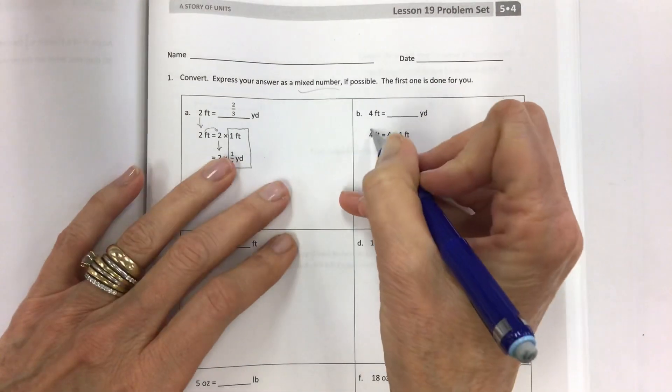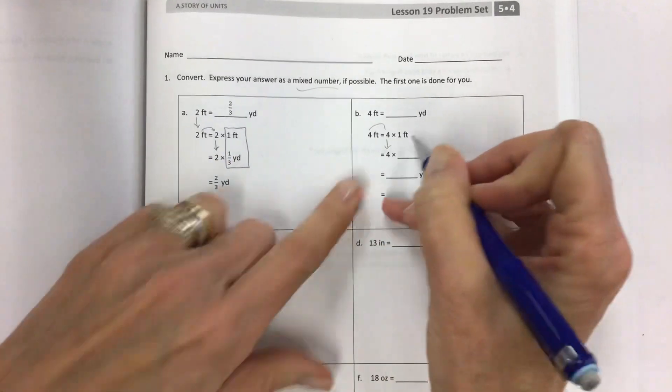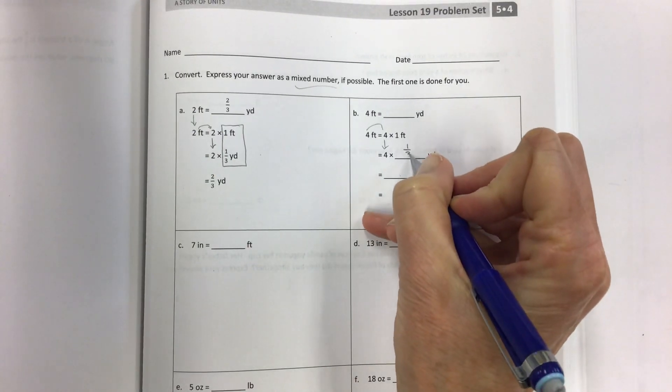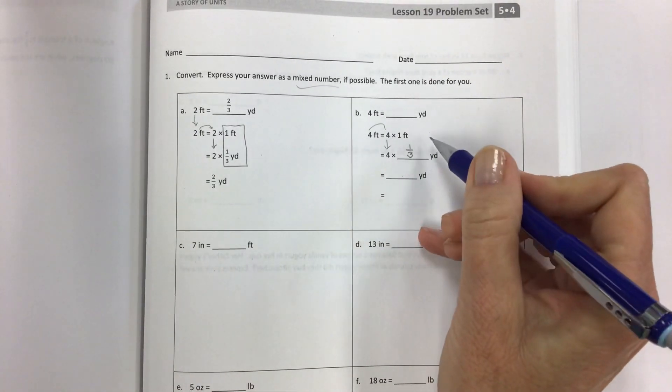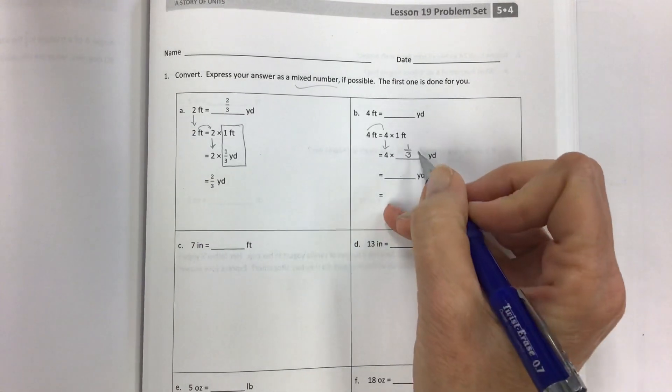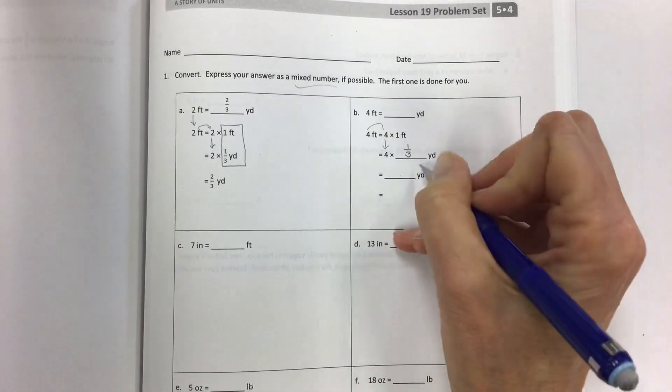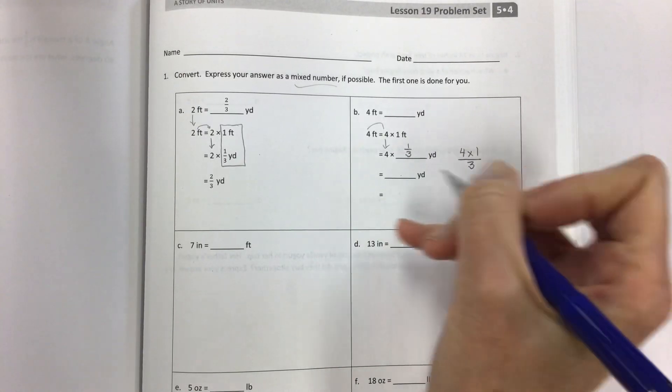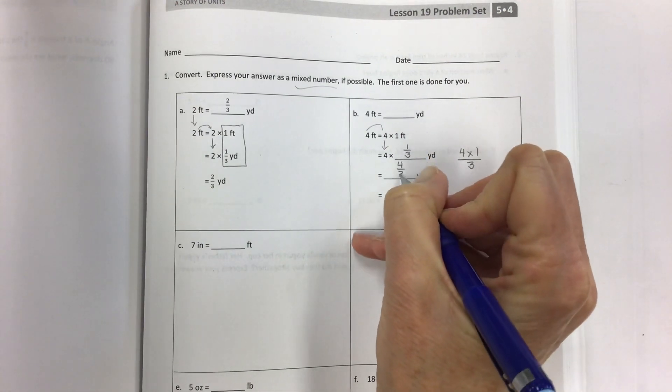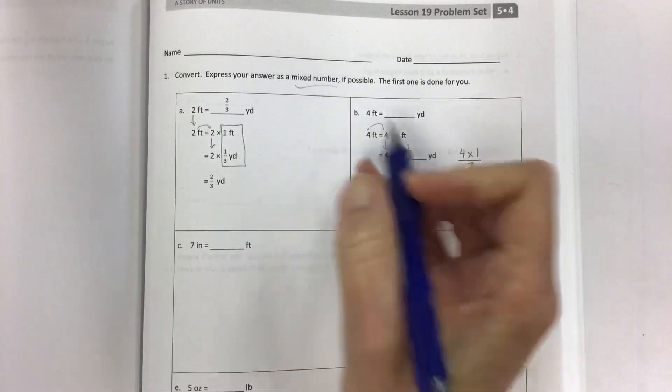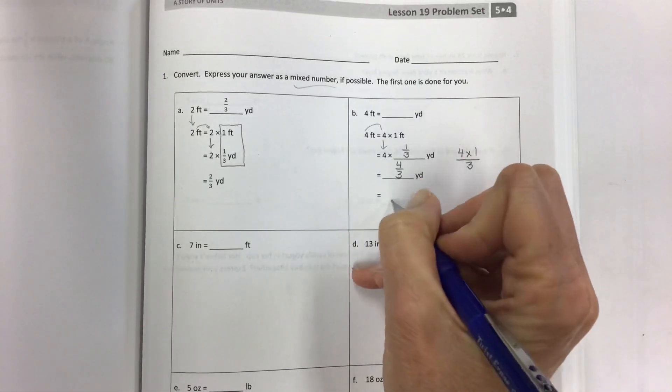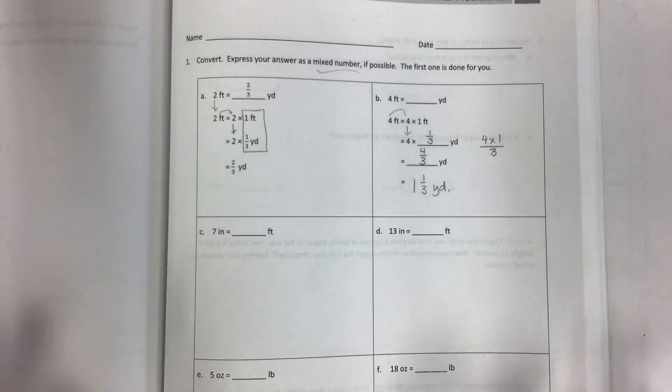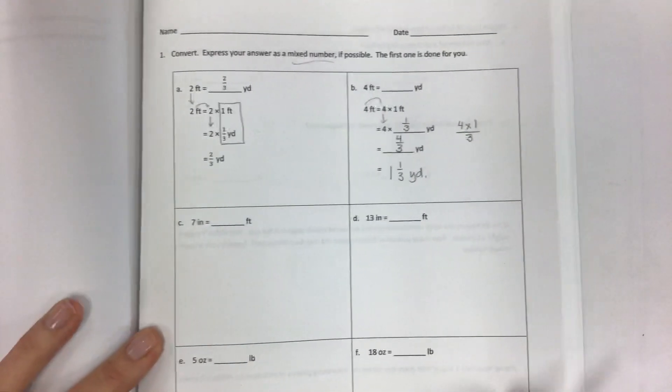Four feet equals how many yards? So copy, copy, times one of the old, and then one foot is equal to how many yards? Well, it's one out of three. You should know that three feet equal a yard. If you don't, just try to memorize it. You can do four times one over three if you want to see that it's going to be four-thirds. And then just write your four-thirds, but of course write it as a mixed number. Don't leave it as an improper fraction. And then you get one and one-third yard.